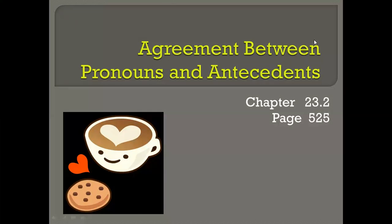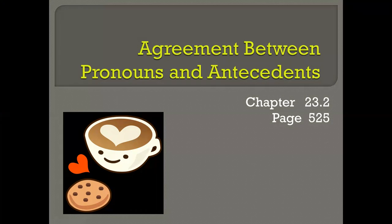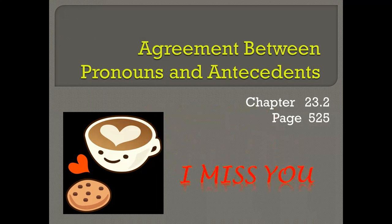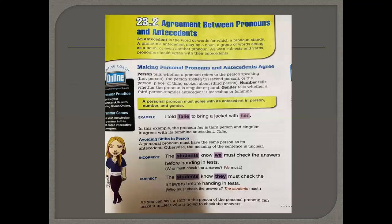Okay, so grade 8, the lesson is agreement between pronouns and antecedents, chapter 23.2, page 525. It is about the agreement between pronouns and antecedents, just like we had agreements between words and subjects. We will begin with page 525, agreement between pronouns and antecedents.